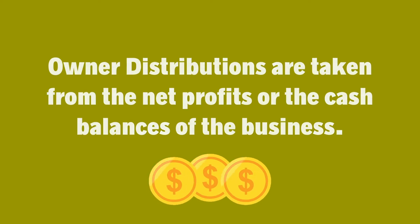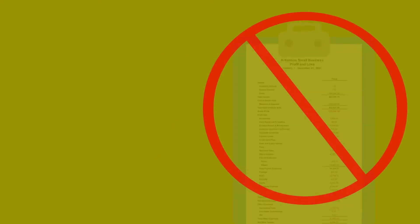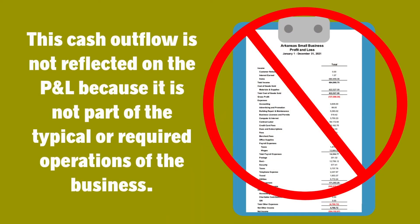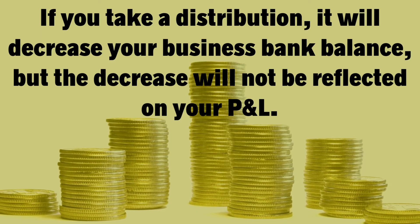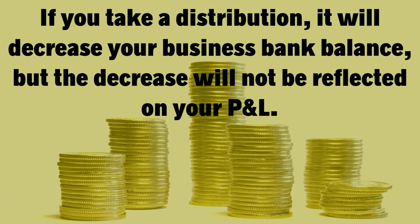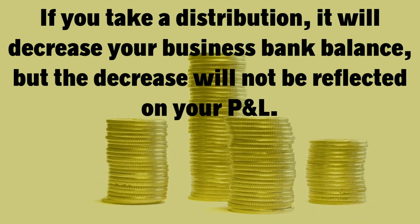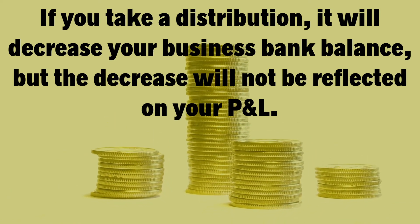Number five: owner distributions. Owner distributions are taken from the net profits or the cash balances of the business. This cash outflow is not reflected on the P&L because it's not part of the typical or required operations of the business. If you take a distribution, it will decrease your bank balance, but the decrease will not be reflected on your P&L.